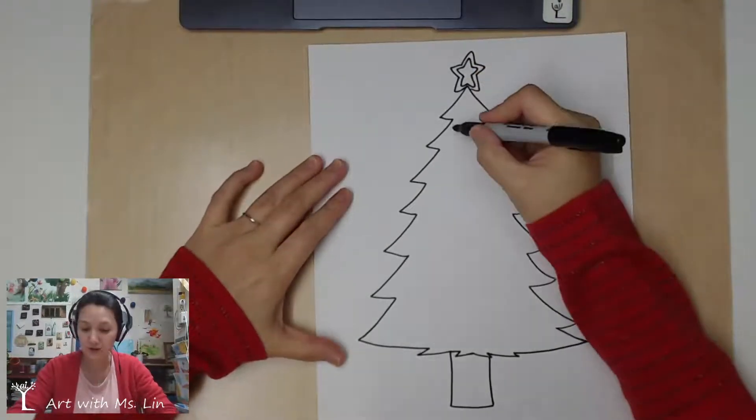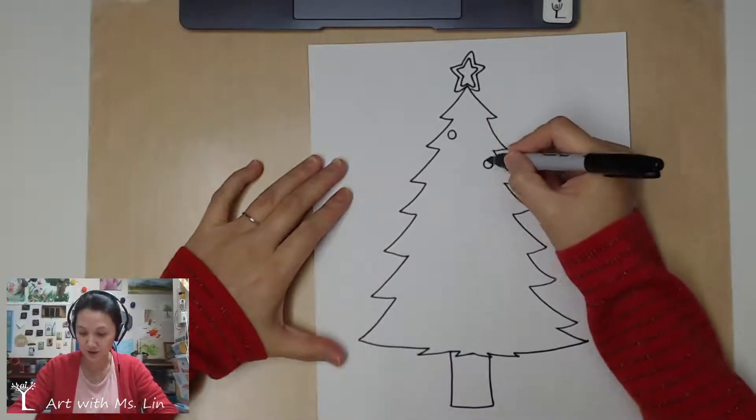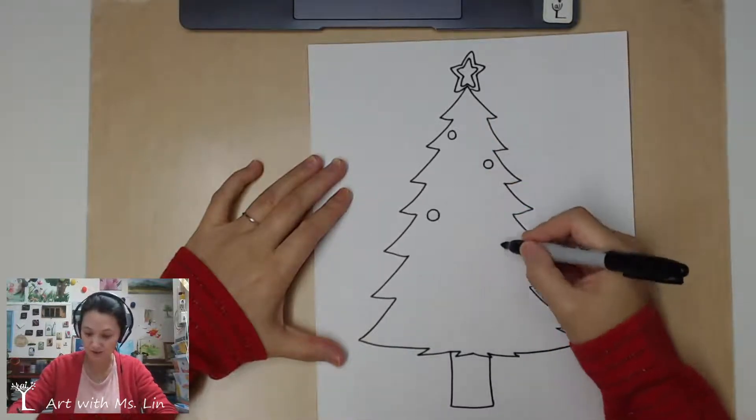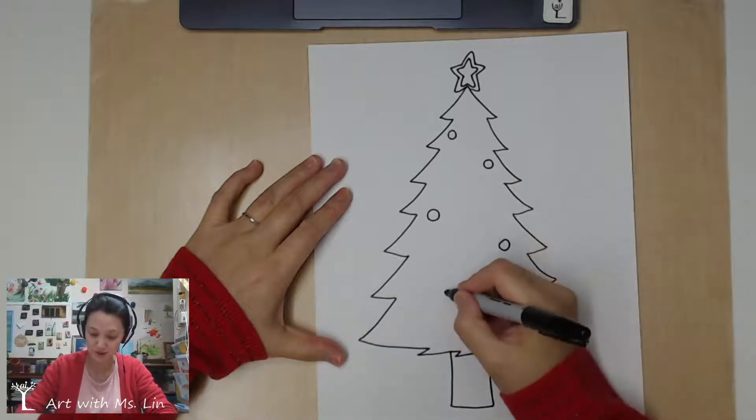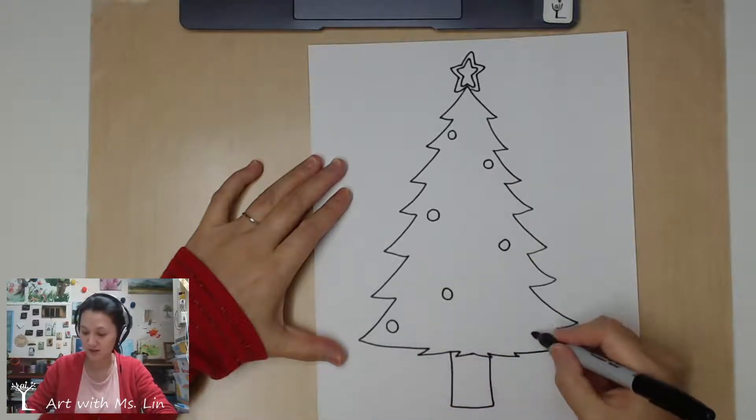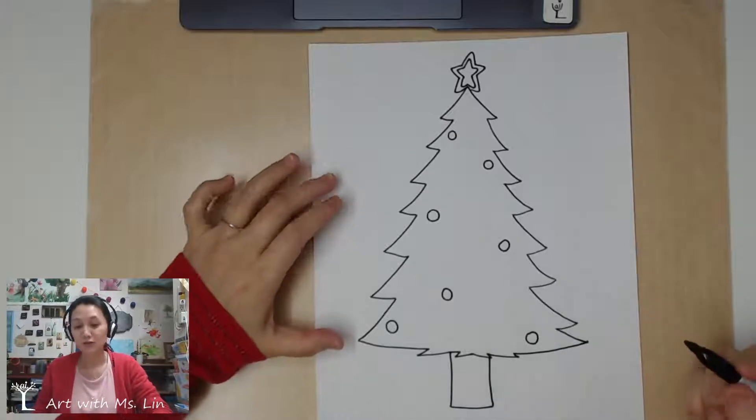So, usually people hang a lot of ornaments. Different shapes, but mostly circles, because they're balls. And then they might have Christmas lights.